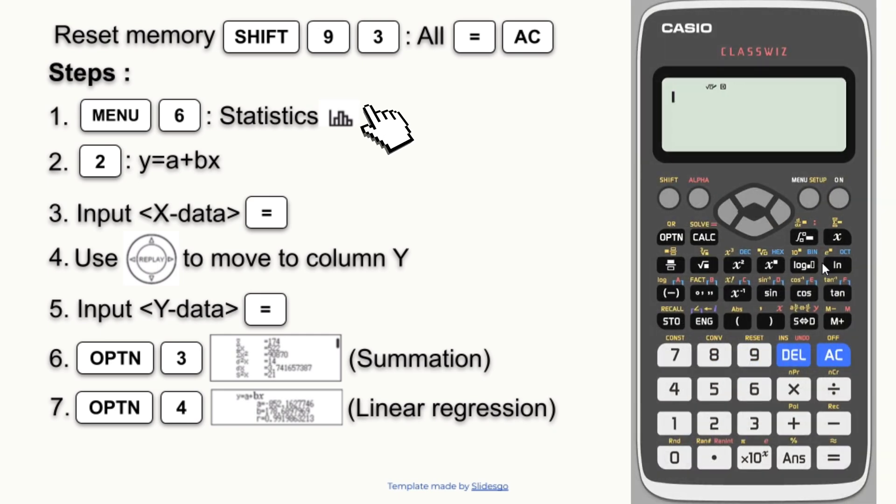Okay, the first step: press menu, then press 6. Second step, press 2, then we come up with this screen.